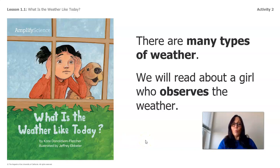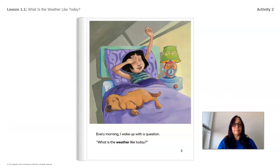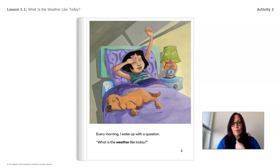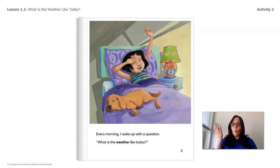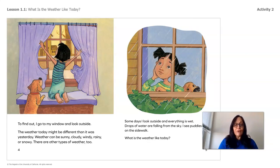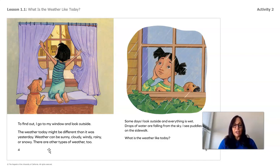So the question is: what is the weather like today? Every morning, I wake up with that question. I do that every morning — do you? I get up, look out the window, and ask myself: what is the weather like today? To find out, I go to my window and look outside. The weather today might be different than it was yesterday. Weather can be sunny, cloudy, windy, rainy, or snowy. There are other types of weather too.